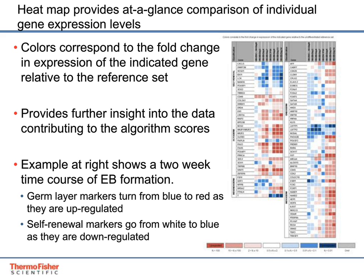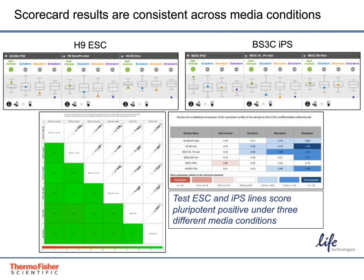Now that we've reviewed the updates to the HPSC scorecard analysis software, let's go through a few data examples. Shown here are scores for two pluripotent stem cell lines cultured under three different media conditions: KSR-based medium on feeders, StemPro on Geltrex, and Essential-8 on Vitronectin. All media conditions show expression profiles similar to the reference set for the self-renewal factors and comparable or down-regulated germ layer factors. The correlation plot in the lower left shows that gene expression is highly correlated across all conditions, and the scores show the classic undifferentiated state profile — plus for self-renewal and minuses for all three embryonic germ layers.